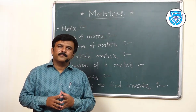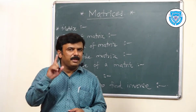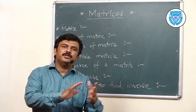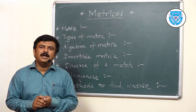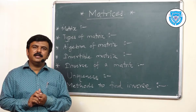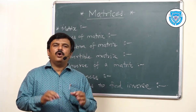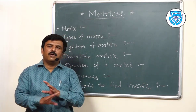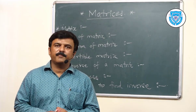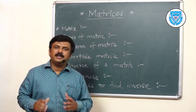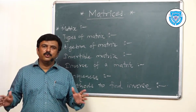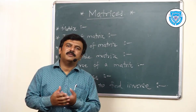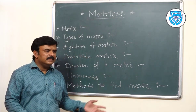Before telling you the definition of scalar matrix, let me remind you about diagonal matrix, because the definition of scalar matrix completely depends on diagonal matrix. A diagonal matrix is a square matrix in which all elements that are not on the diagonal are zero. In a scalar matrix, all off-diagonal elements are zero and all diagonal elements are the same — for example, if it is two, then every diagonal element is two.